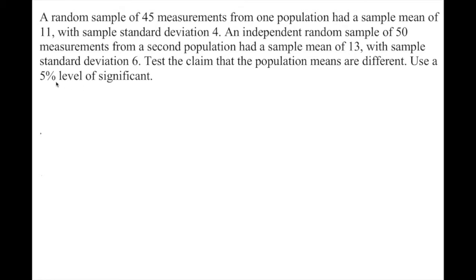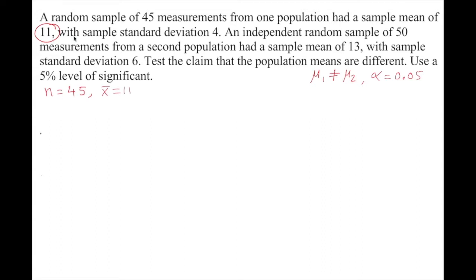We are going to construct a hypothesis test claiming that the population means are different. Population mean 1 cannot equal population mean 2. Alpha is equal to 0.05. From the first sample: n₁ = 45, X̄₁ = 11, s₁ = 4.